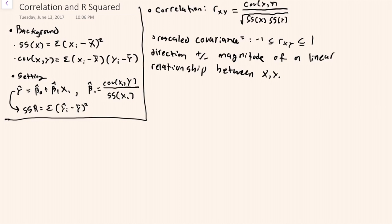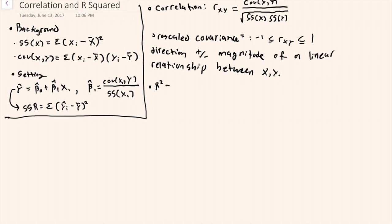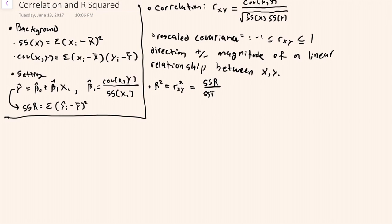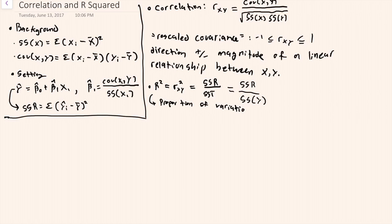Another concept closely related to correlation is R-squared, which can be computed just by taking the correlation and squaring it. But more generally, R-squared is the sums of squares regression from some model over the sums of squares total in the thing being estimated by the model. For the example posed in the setting, this would be the sums of squares regression from that model divided by the sums of squares in y. This can be interpreted as the proportion of variation in y that is explained or accounted for by the model.